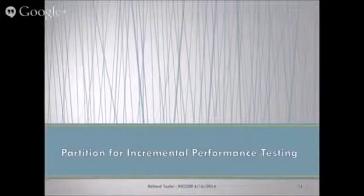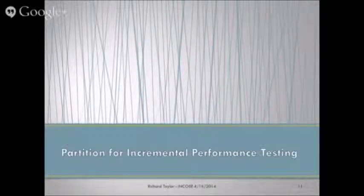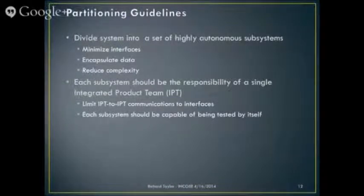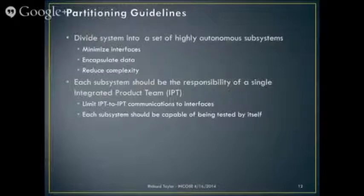Clustering is the most important part of architecture — it buys you out of all kinds of problems. Incremental performance testing is very much related to it because you can test a cluster independently of other clusters. When you define subsystems, you're trying to find relatively autonomous units, minimizing the interfaces, reducing the complexity between the interfaces, and encapsulating data. You don't share data because whenever you share data, you get side effects — if somebody in another subsystem modifies your data, you didn't change a line of code and suddenly it behaves differently. Encapsulate the data and provide data services where you need to share data, but don't let them access the data directly.